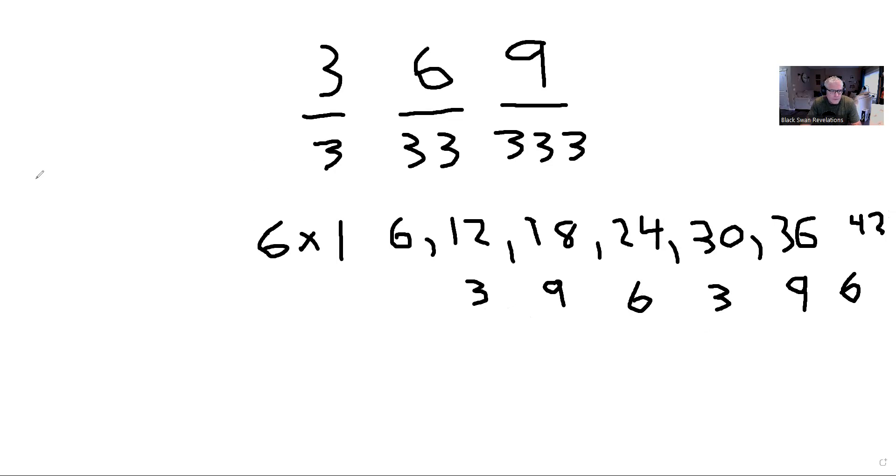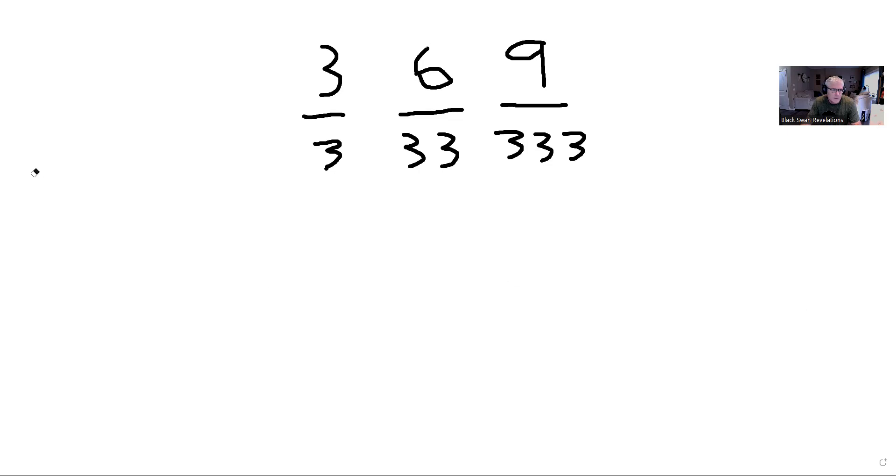Now if we jump to the nine times table, let's see what goes on with that one. Nine times one is nine, nine times two is eighteen, nine times three is twenty-seven, nine times four is thirty-six, nine times five is forty-five, nine times six is fifty-four. What kind of pattern do we get here?